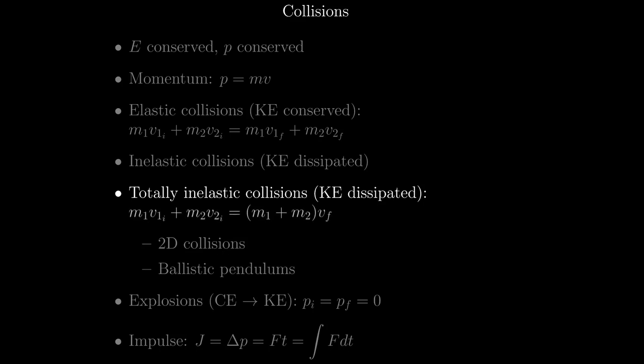The conservation of momentum equation for totally inelastic collisions is the same as the one for elastic collisions, except for the final momentum. Since the objects can be treated as one object after the collision, their masses can be added together, and since they stick together, they will have the same final velocity. We'll apply this equation specifically to a 2D collision problem and a ballistic pendulum problem.